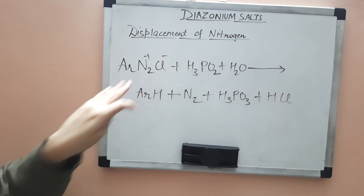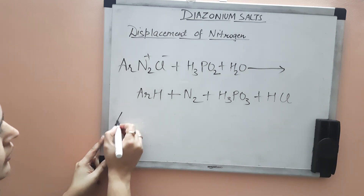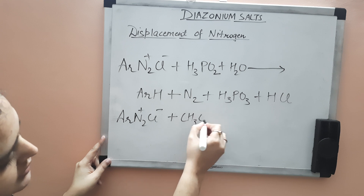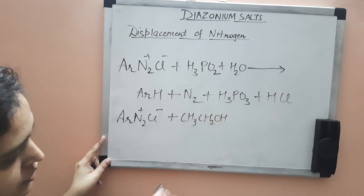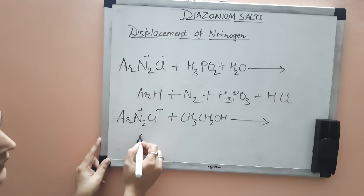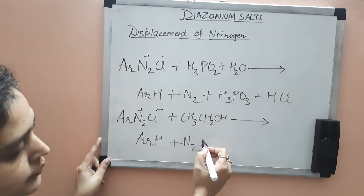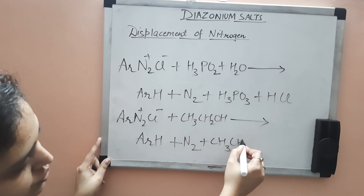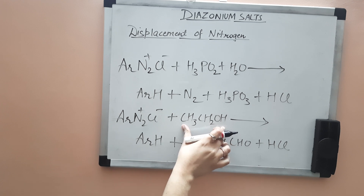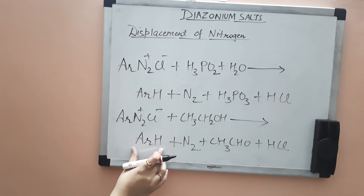This also involves displacement of nitrogen. Another reaction using a mild reducing agent is with ethanol. Treat your diazonium salt ArN2+Cl- with ethanol (CH3CH2OH) and you get your arene ArH again. N2 is released, the ethanol is oxidized to acetaldehyde (CH3CHO), and HCl is also formed.